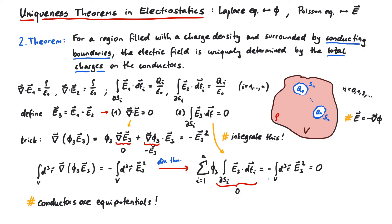What does this mean? The integral over E3 squared is zero. A squared quantity cannot be negative, so the only way that adding pieces of E3 squared leads to zero is that E3 itself is zero everywhere. And this finally means that E1 and E2 are exactly the same. The electric field in this region is unique.